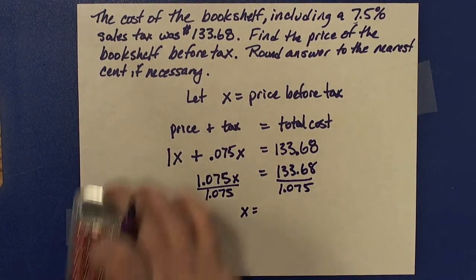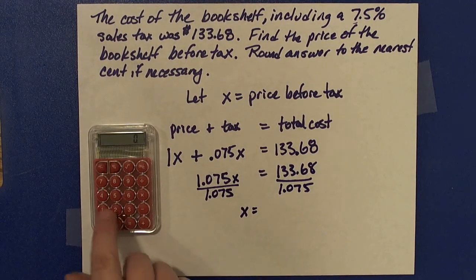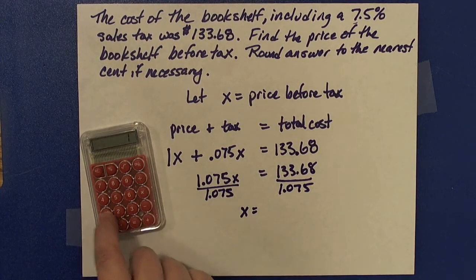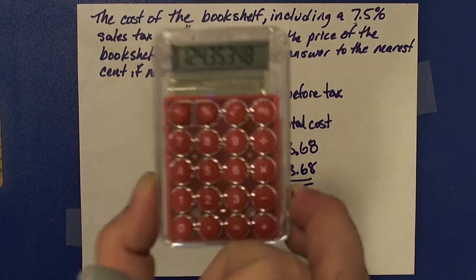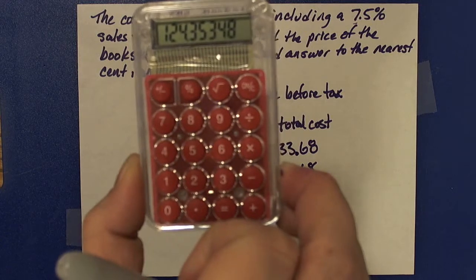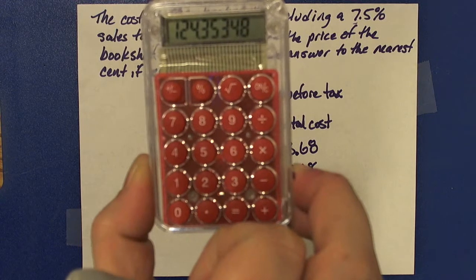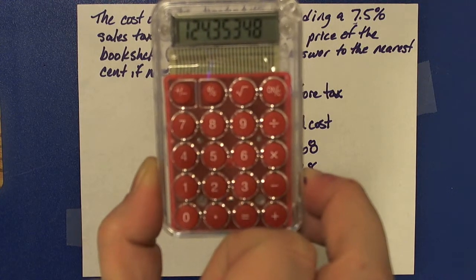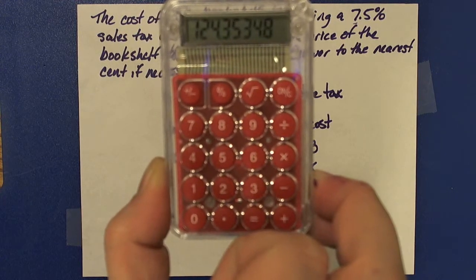I have a calculator here. I'm going to put in 133.68 divided by 1.075. I get 124.35348. I'm asked to round to the nearest cent, so that would be $124.35, because the next digit is a 3 and it doesn't round up.